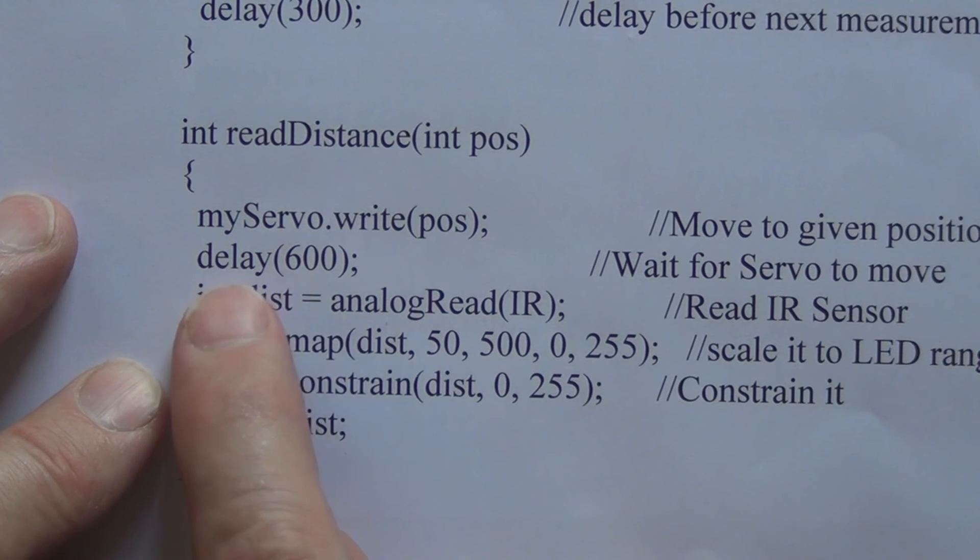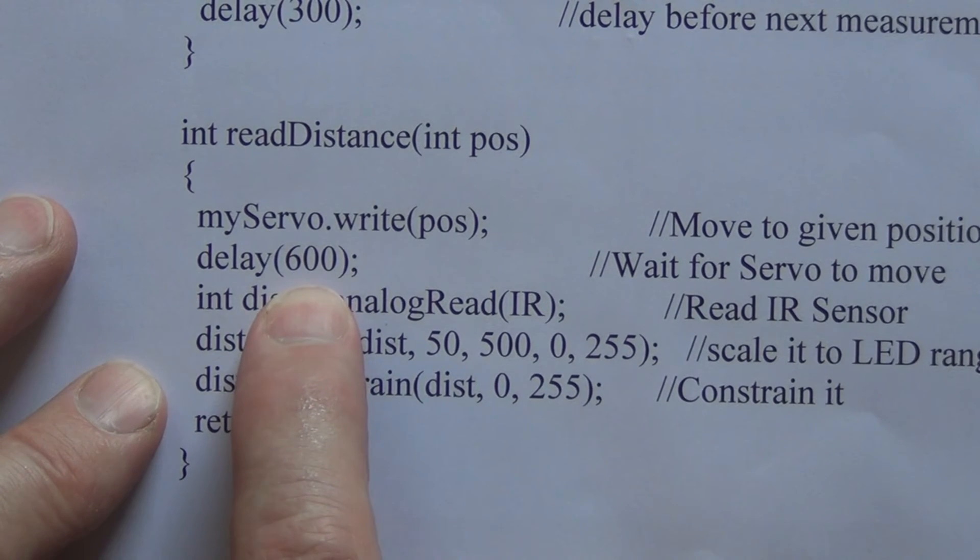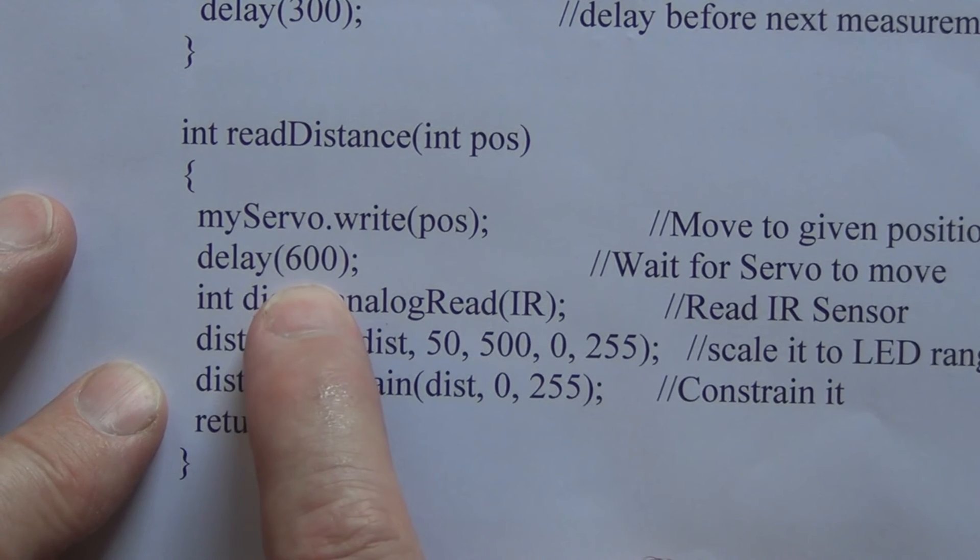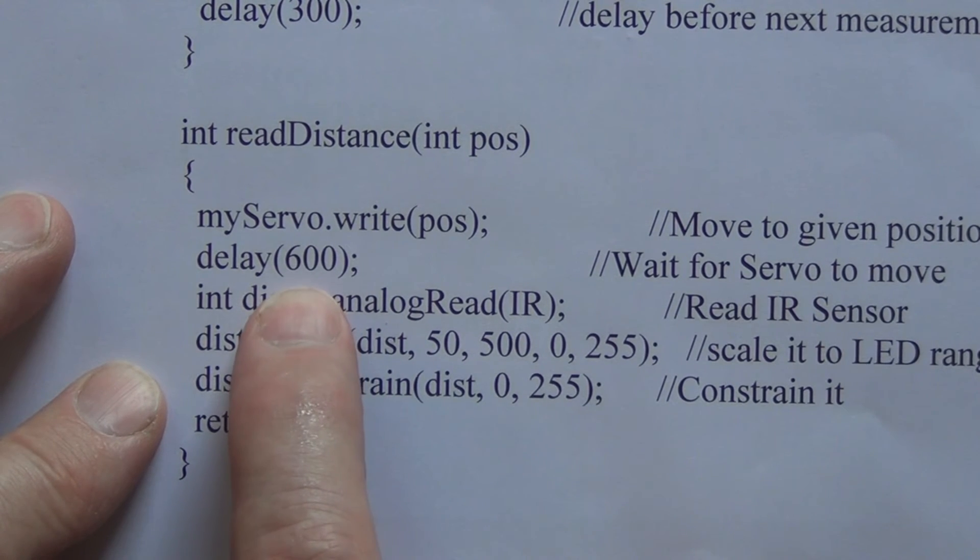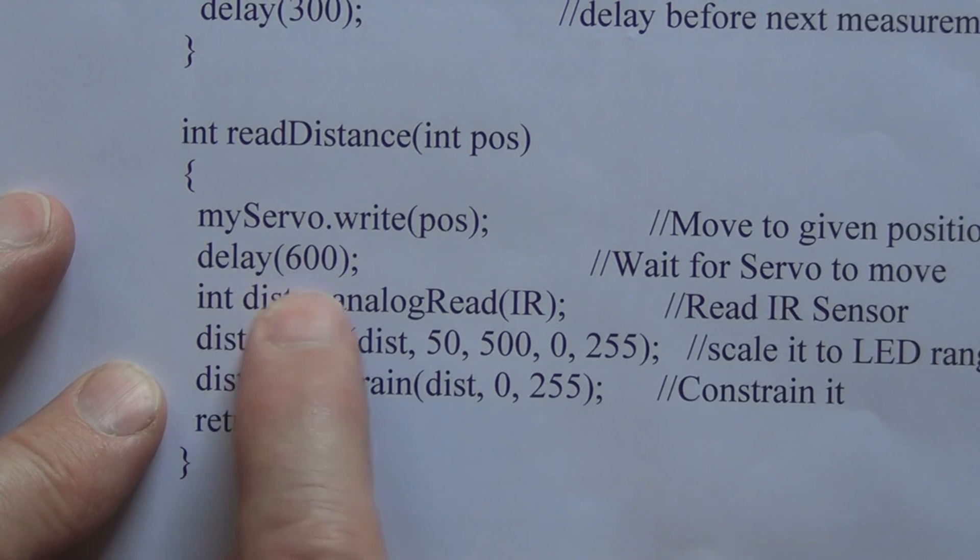And then we have a little delay here. We have more of a delay, 600, because it takes a mechanical device to move - takes a lot more time for it to move to its position, so we are allowing here for a delay of 600.